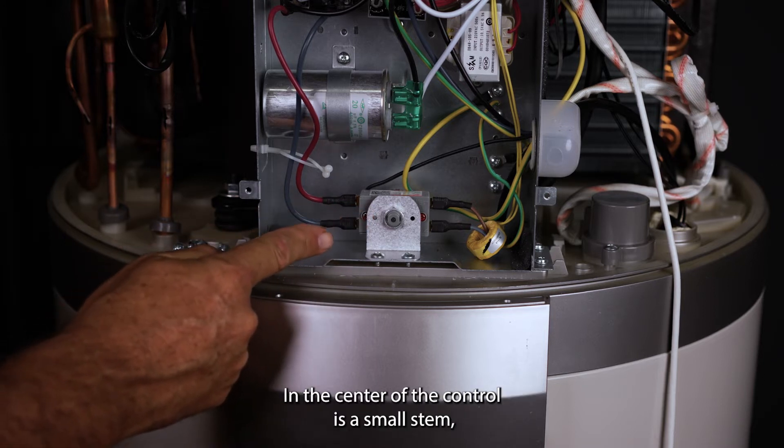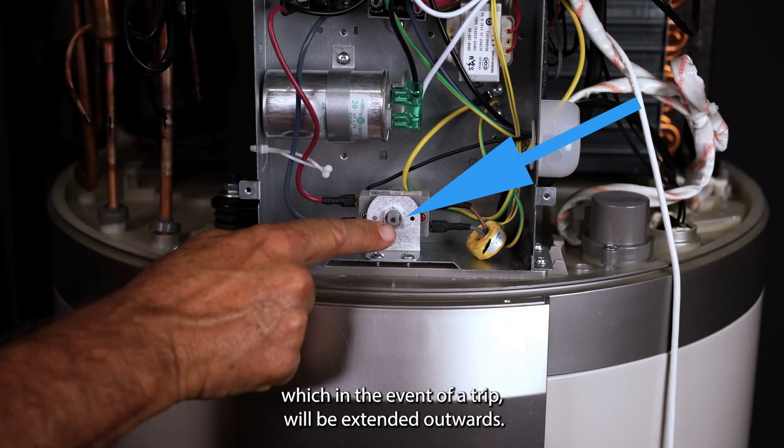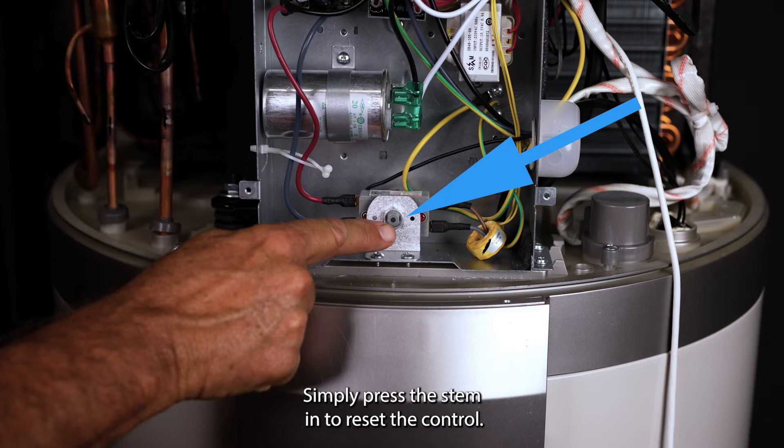In the centre of the control is a small stem which in the event of a trip will be extended outwards. Simply press the stem in to reset the control.